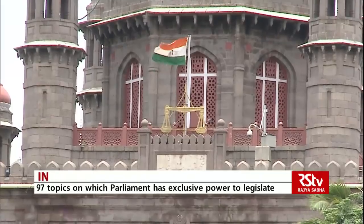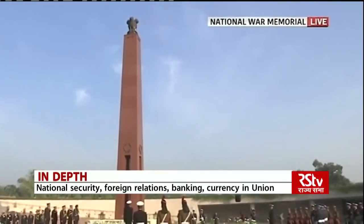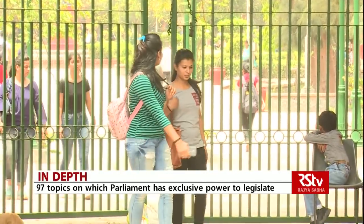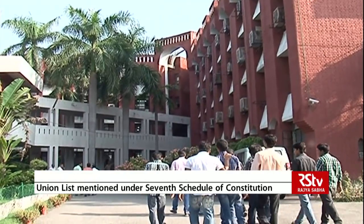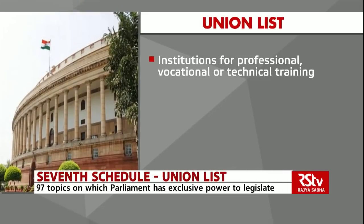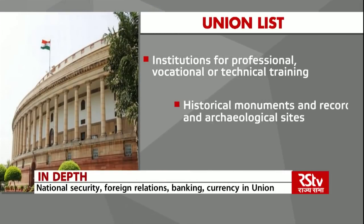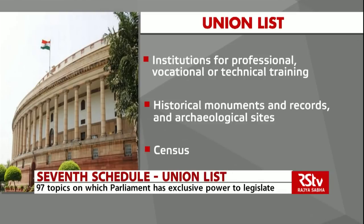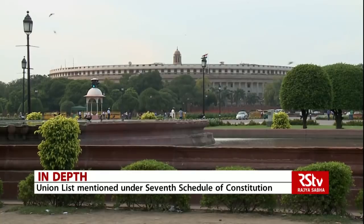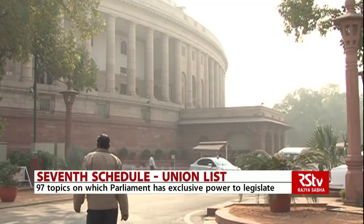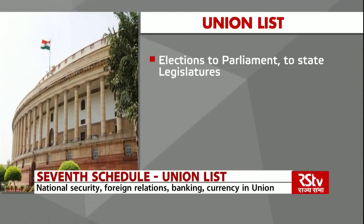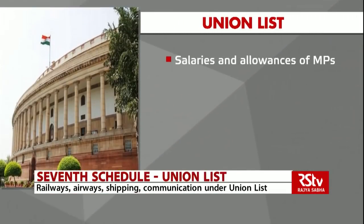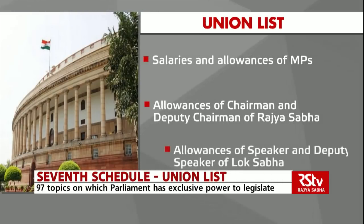Institutions of national importance including the National Library, the Indian Museum, the Imperial War Museum, the Victoria Memorial and the Indian War Memorial are also under the union list. This also includes the Banaras Hindu University, the Aligarh Muslim University and the Delhi University among others. Union agencies and institutions for professional, vocational or technical training including the training of police officers, ancient and historical monuments and records and archaeological sites, census and the union public services. One of the key topics in the union list is the conduct of elections to Parliament, to state legislatures and to the offices of President and Vice President, the Election Commission, salaries and allowances of members of Parliament, the Chairman and Deputy Chairman of Rajya Sabha and the Speaker and Deputy Speaker of the Lok Sabha.